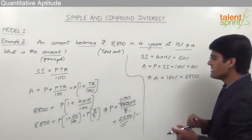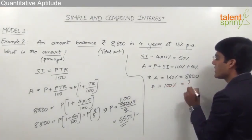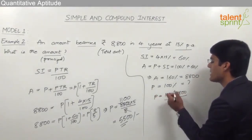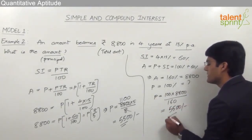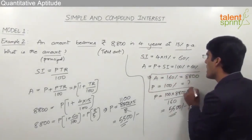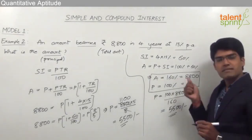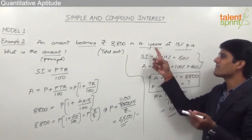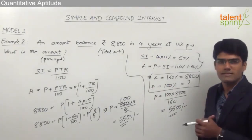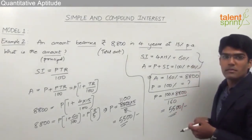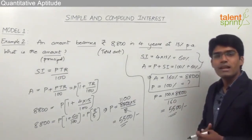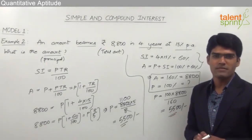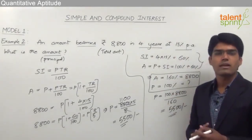We need to find the principal, which is 100%. Cross multiplying: principal = 100 × 8,800 / 160 = 5,500 rupees. The only step needed on paper is: 160% = 8,800, so 100% = ? All other mental calculations — 15% × 4 = 60%, 100 + 60 = 160 — can be done without writing. Simply cross multiply to get the required answer.